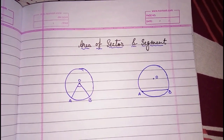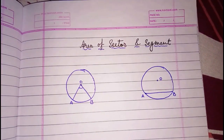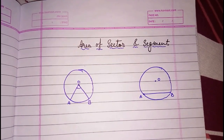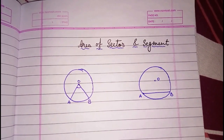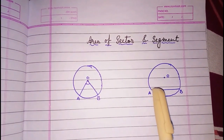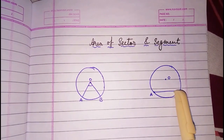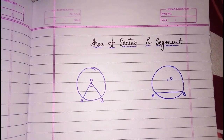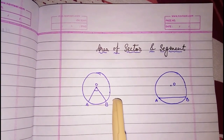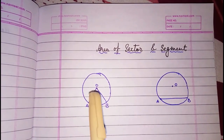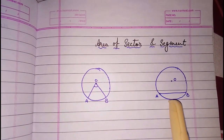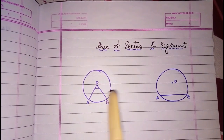If we want to cut pizza, there is a different method, and if we want to break a biscuit, there is a different method. A circle can be divided in two ways. We can cut a circle like this, or like this. We will cut pizza in this shape, but we will not cut it like a biscuit. We have to break a biscuit like this. So we need to study both these areas.